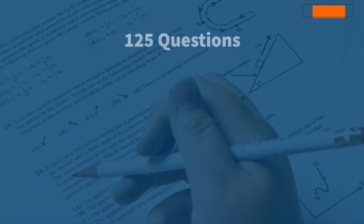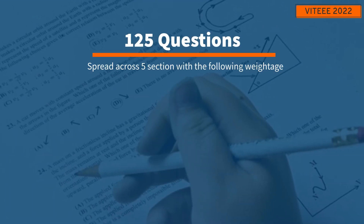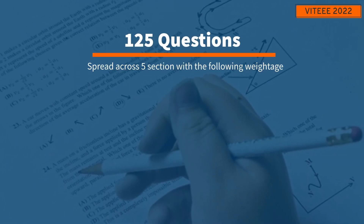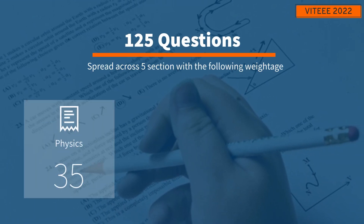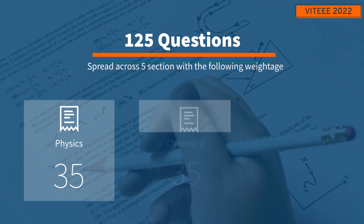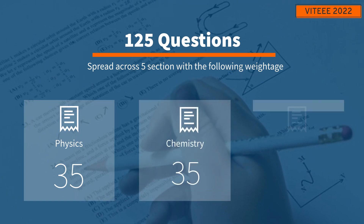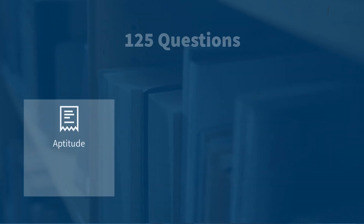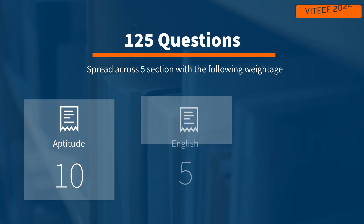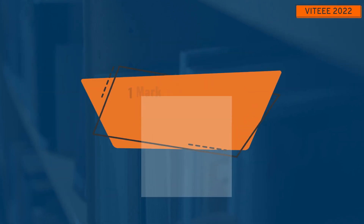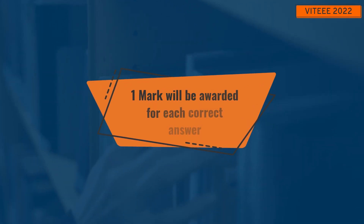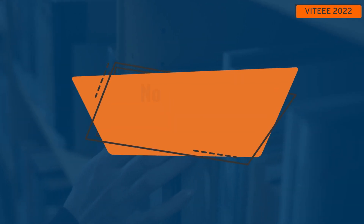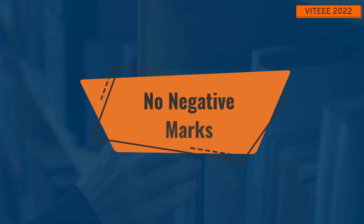There are a total of 125 questions spread across five sections with the weightage of Physics 35, Chemistry 35, Math or Biology 40, Aptitude 10, and English 5. One mark will be awarded for each right answer and there will be no negative marking in the VITEEE exam.